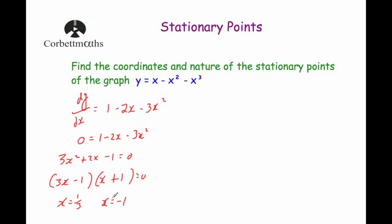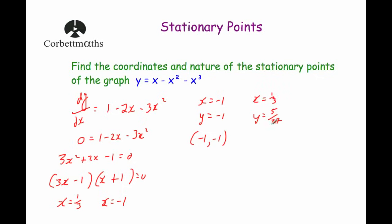We now substitute these x values into the equation of the curve to get the y values. When x equals minus 1, substituting gives y equals minus 1, so the coordinate is (−1, −1). Substituting x equals one third: y equals one third minus one third squared minus one third cubed, which gives y equals 5/27. So the coordinate is (1/3, 5/27).